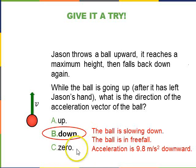Okay, so hopefully you realized that the acceleration vector is down. This ball is slowing down and its velocity is upwards, so acceleration is in the opposite direction of the velocity. And another way of thinking about that is that the ball is in free fall, so the acceleration is 9.8 meters per second squared downward.